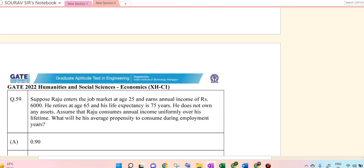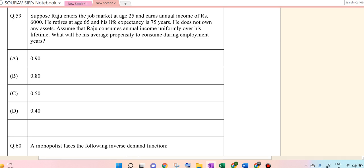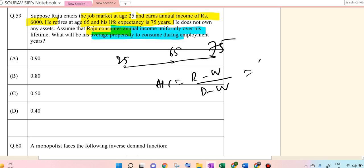Next question is 59. Suppose that Raju enters into the job market at age 25, earns annual 60,000, he retires at 65, life expectancy is 75. He doesn't own any asset. Assume Raju consumes annual income evenly over his life. APC here, 25 he starts off, then 65, then for another 10 years. So APC is equal to R minus W by D minus W. So 65 minus 25 and 75 minus 25, 40 by 50, 0.8. So average propensity to consume is 0.8.